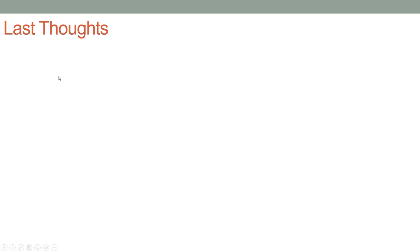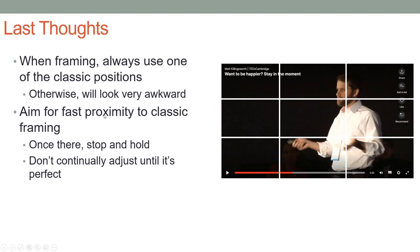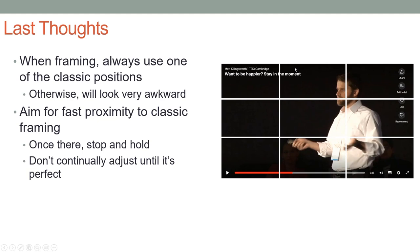Let me leave you with a couple of final thoughts. First, whenever you're framing a subject, use the classic position — otherwise it's going to look very awkward, and that's the whole point of this lesson. Second, aim for fast proximity to the classic framing, and once you're there, stop and hold. Don't continually adjust until it's perfect. This shot has good look room; ideally you'd have the subject's eyes right at this intersection. From my perspective, this is good enough — I wouldn't use minute adjustments to try and get his eyes exactly there, because the audience isn't going to notice the difference and the motion could be irritating. Try to get close fast and then just leave it.